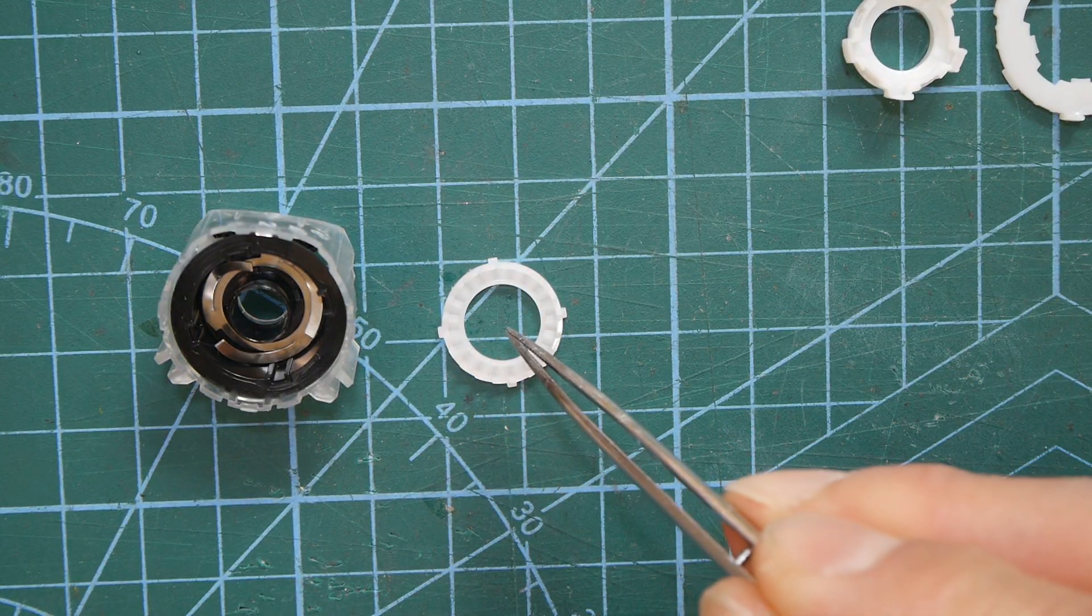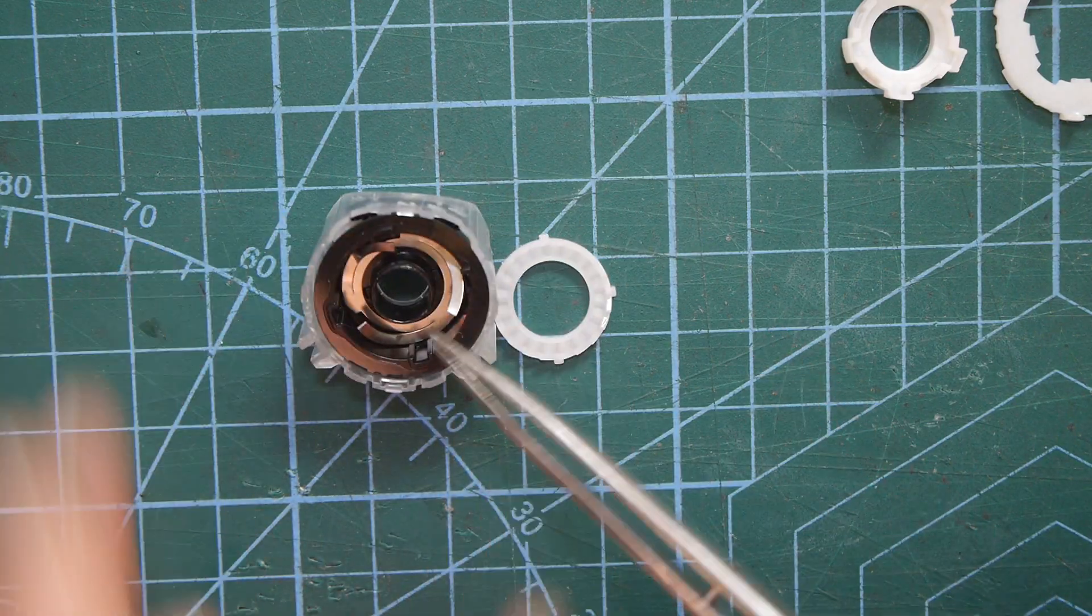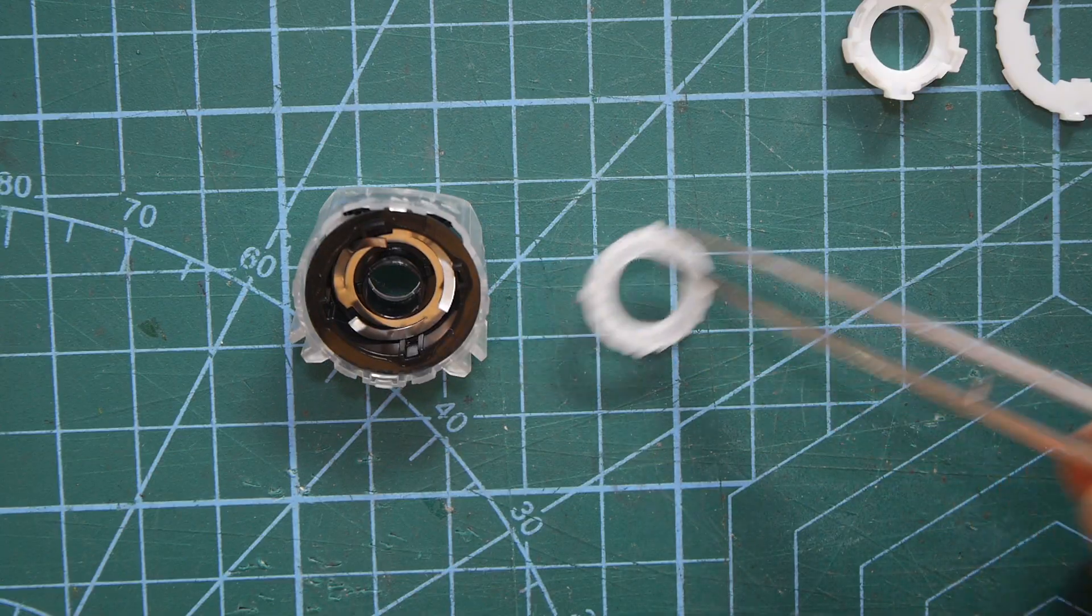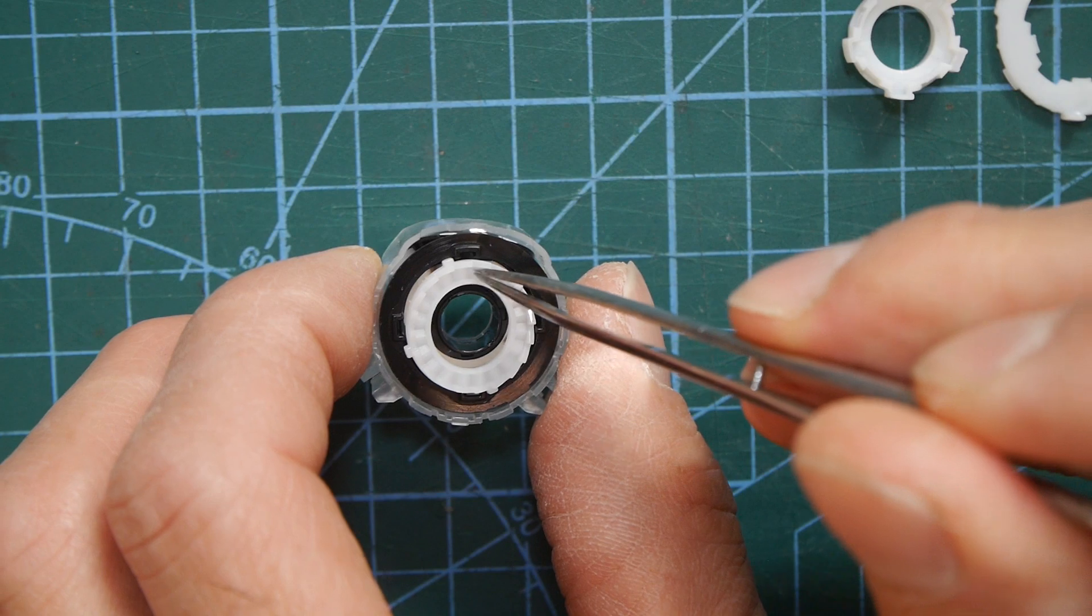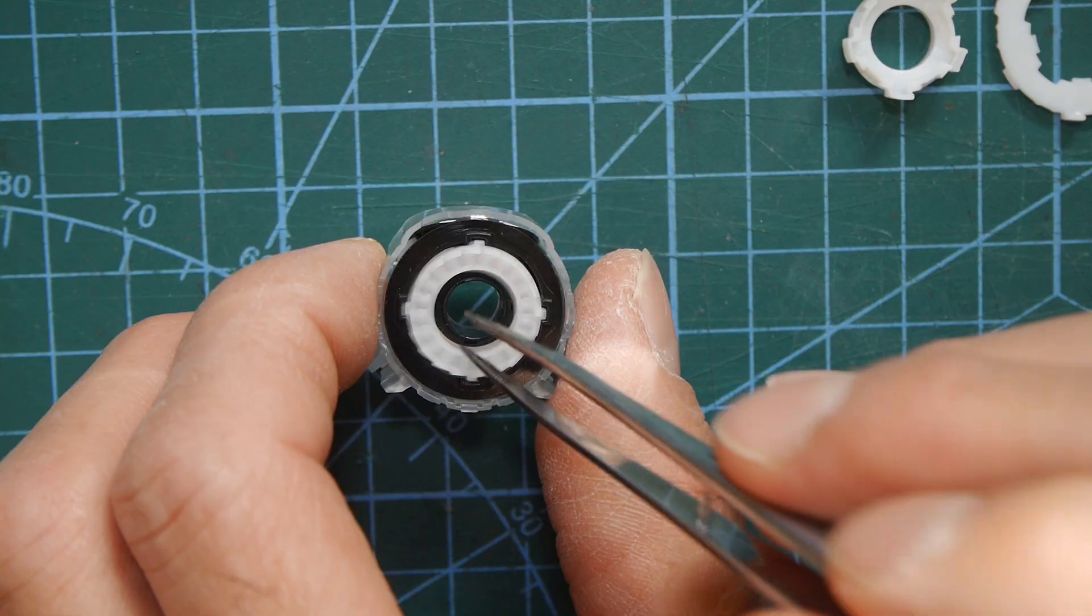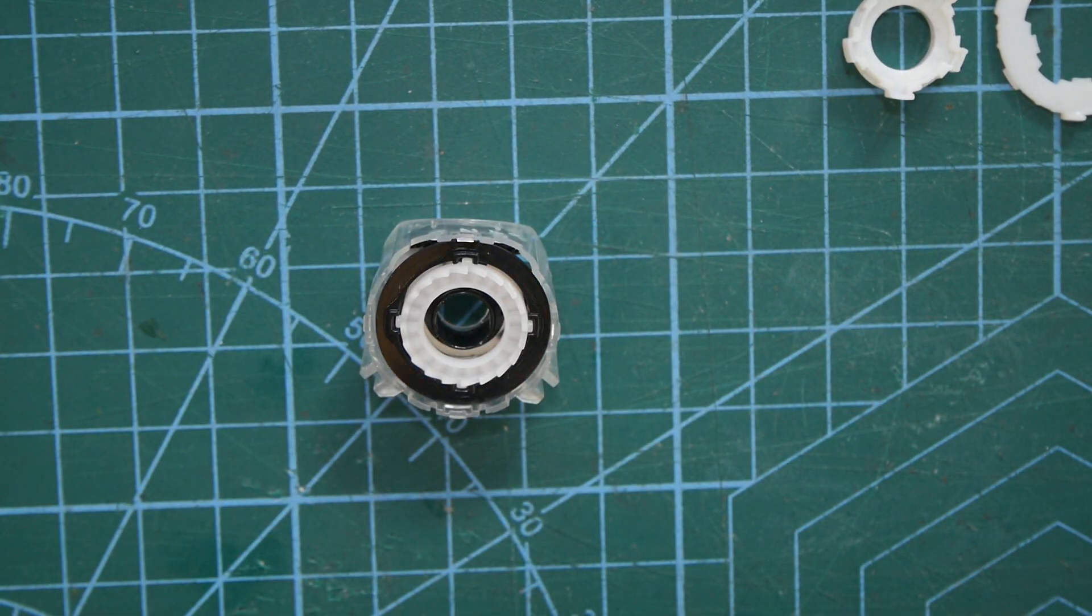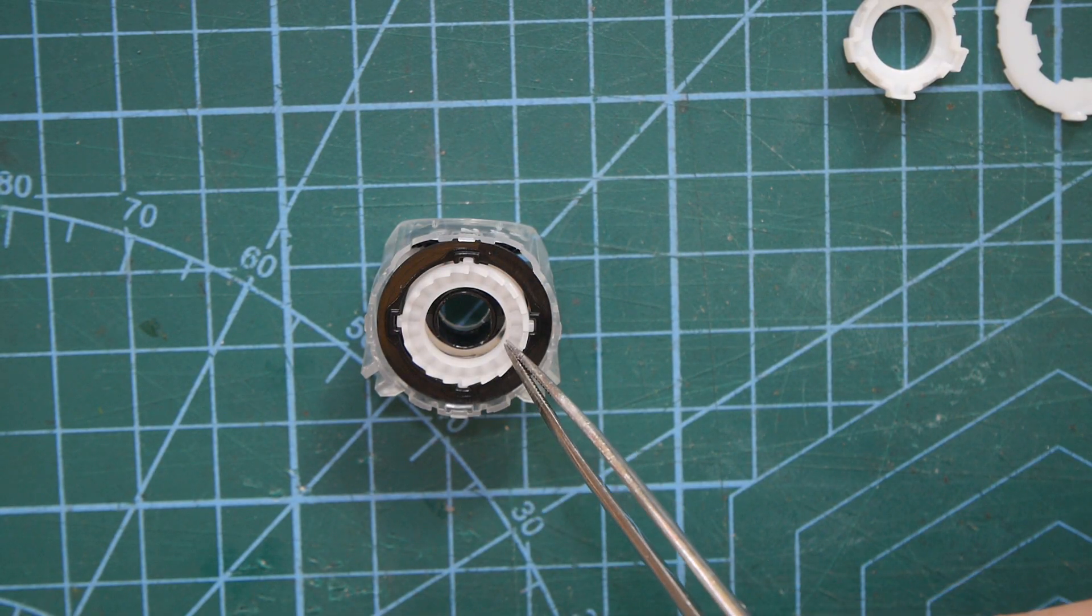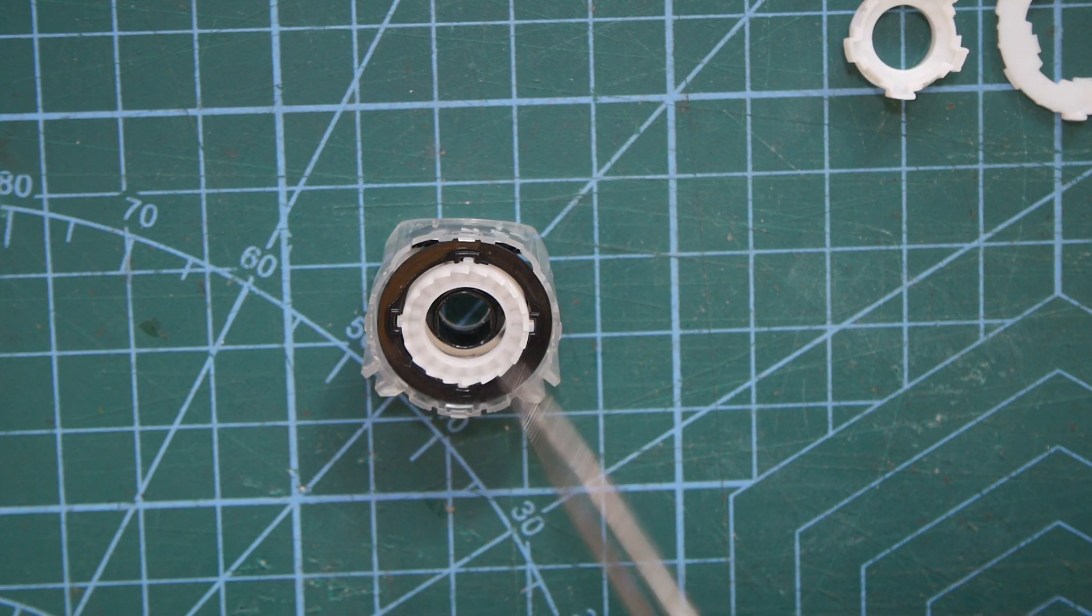And then the next bit that goes on top of that has little sort of ratchety gears on it. Now you might think okay so that goes down there and turns the spring, nope, the spring is literally just a spring. So the ratcheted gears have to actually go in from above.